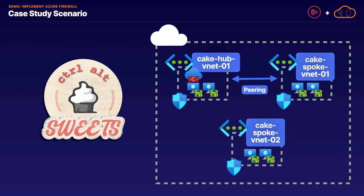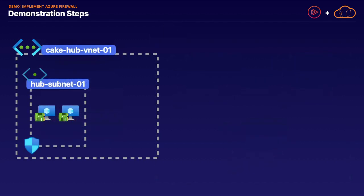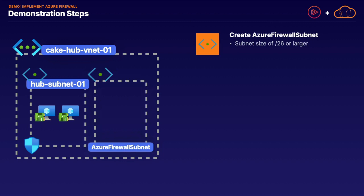Let's talk about the demonstration steps. We have our Hub VNet with our Hub Subnet where we have two virtual machines. We're going to start off by creating an Azure Firewall Subnet with a subnet size of slash 26 or larger. We have to create it within a specific CIDR range — slash 26 or larger — in order for our firewall to have enough IP addresses to provide high availability. We're going to use a slash 26.